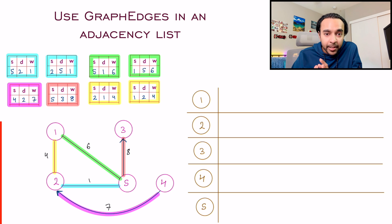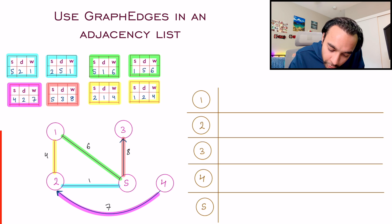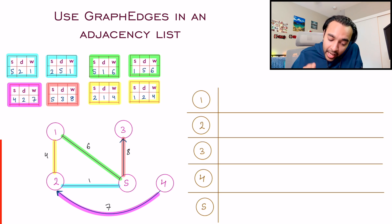All of my objects are now ready. It is time that you place them in your adjacency list. For node number one, I have two edges. So I'm going to take them and put them in my adjacency list.